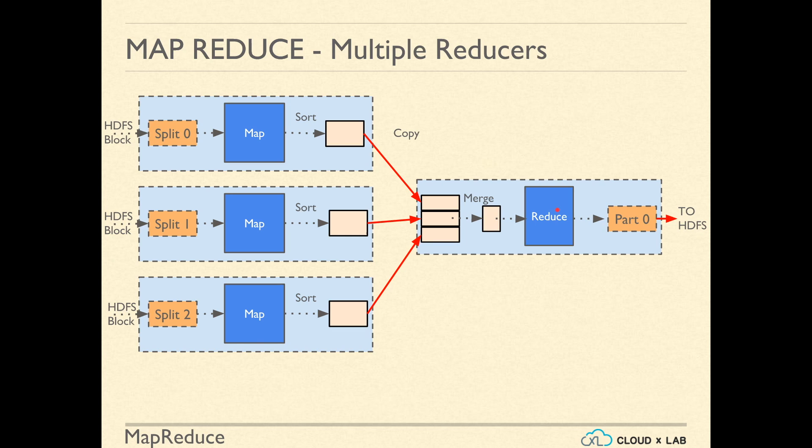So, if you want to group data based on some criteria, that criteria would be expressed in the mapper logic. And how to combine all these values for each key is governed by your logic of reducer. The result of reducer is saved into the HDFS.